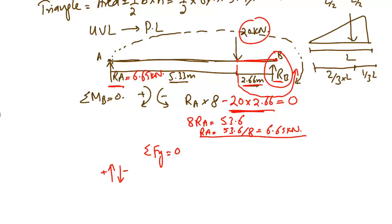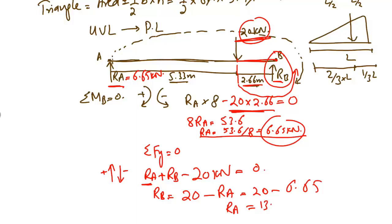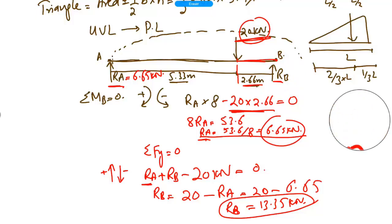RA and RB both act upward, and the 20 kN load acts downward. So: RA + RB − 20 = 0. We know RA = 6.65 kN, so: RB = 20 − 6.65 = 13.35 kN. Therefore, the support reaction RB equals 13.35 kN acting upward. The vertical reaction at support B is 13.35 kN.